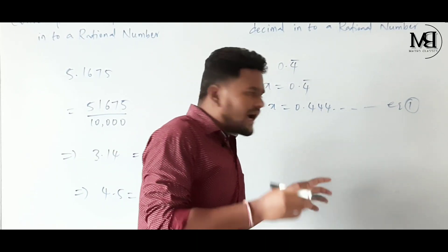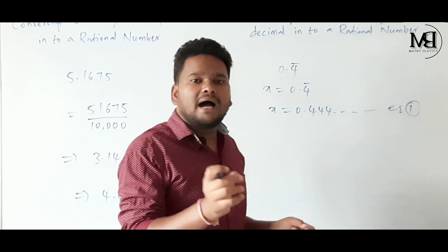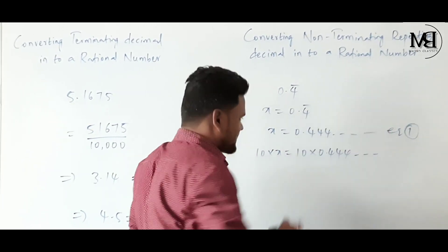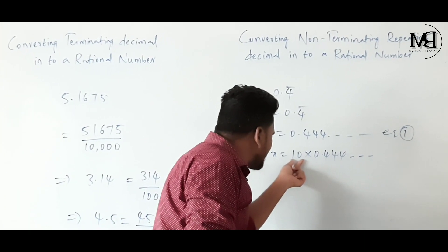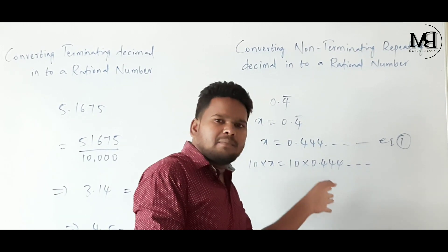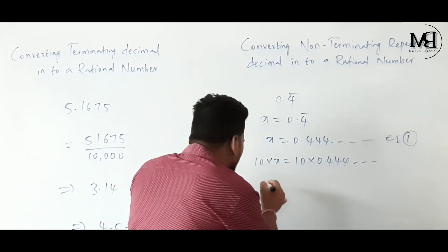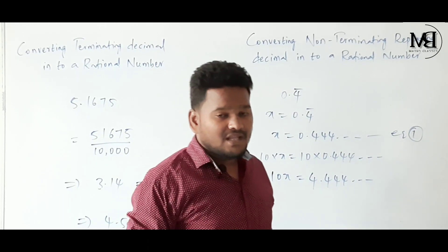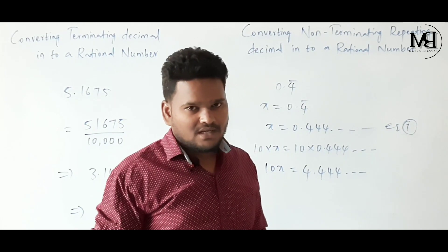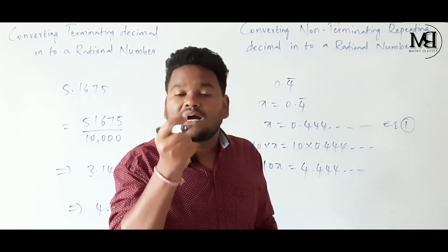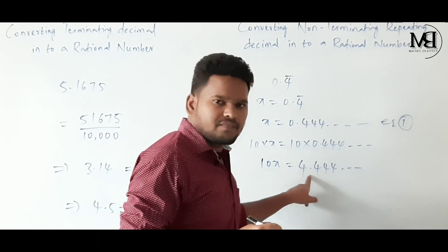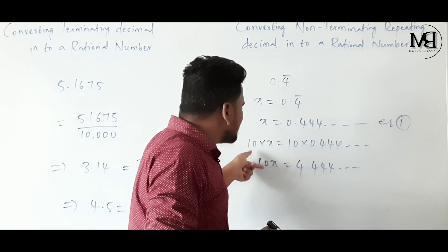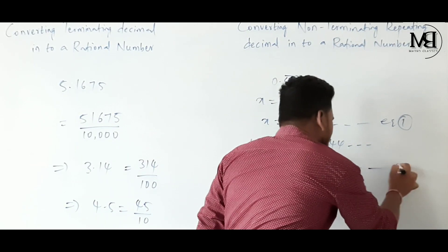To get the decimal point after the repeated digit, we multiply both sides by 10. So 10X = 10 × 0.444... = 4.444... The decimal point is now after the repeated digit 4, so we consider this as equation 2.